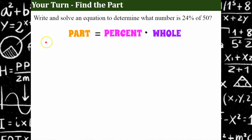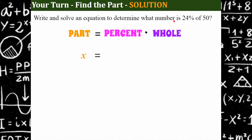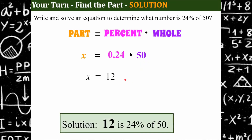Your turn — pause the video and write an equation that represents 'what number is 24 percent of 50,' then solve it. Our solution: the part is unknown, so x equals 0.24 (percent written as a decimal) multiplied by 50. Multiplying 0.24 by 50 gives 12. So our solution is that 12 is 24 percent of 50.